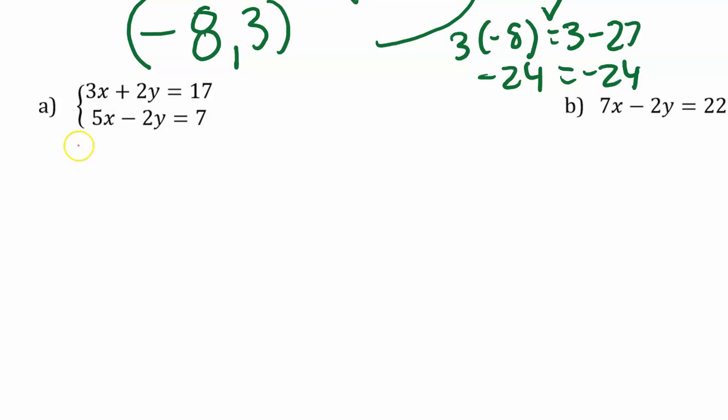So the first thing that we see with A is the y terms are already opposite one another and it's already in standard form. So I can directly add these two equations together. 24 on the right, 8x on the left, and the y's have eliminated one another. So 8x equals 24. I'll divide both sides by 8. x equals 3.